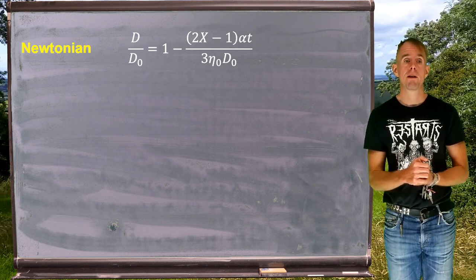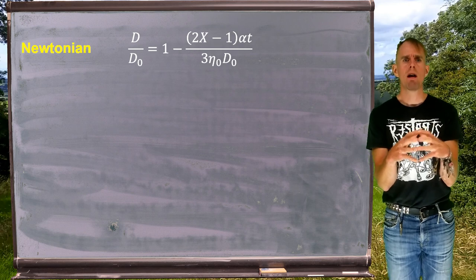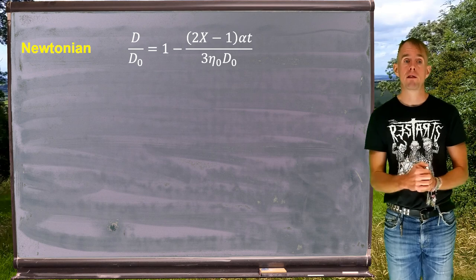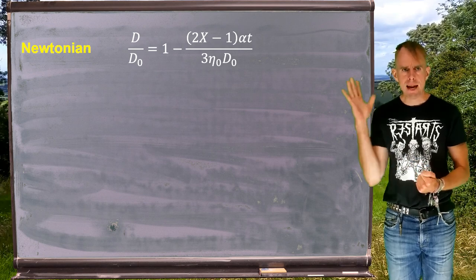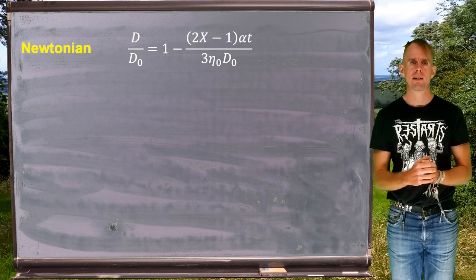What's resisting the flow in the Newtonian fluid is, of course, viscosity, which is there represented by eta 0. X is something called a shape factor. We'll talk more about that in the next part of this lecture.